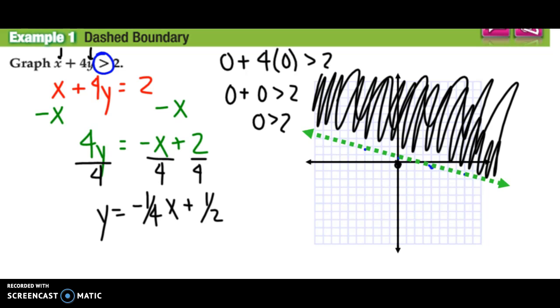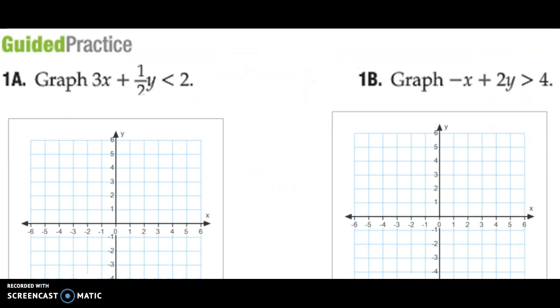Now I can check to make sure that this is correct. So if I pick one over here, let's say right here, that's the point 0, 4. So if I put 0, 4 into my original inequality, okay, so I put a 0 in here and 4 into a y, I get 0 plus 4 times 4 is greater than 2. Well, 0 plus 4 times 4 is 16 is greater than 2. Is that true? It is. So we did shade it correctly. Here's a couple guided practice problems that you can try on your own.